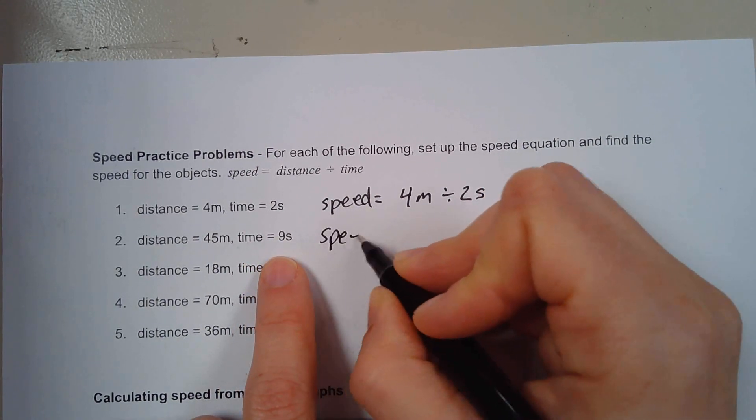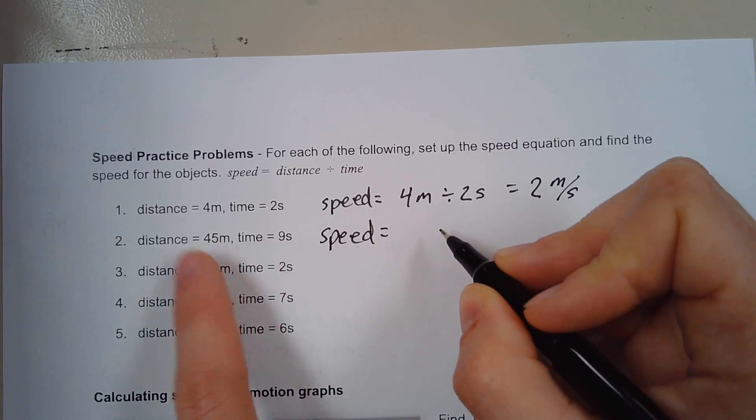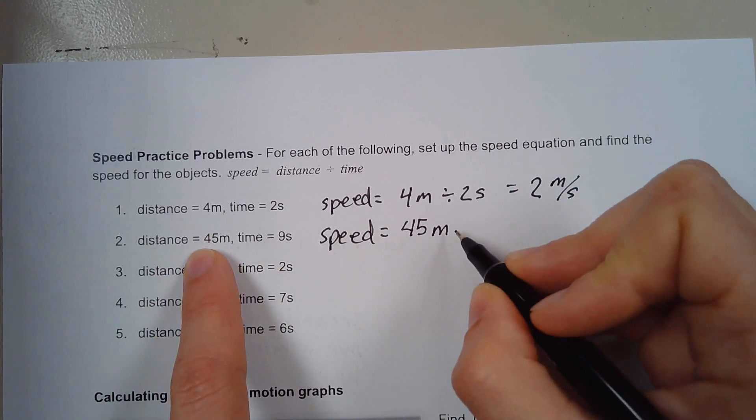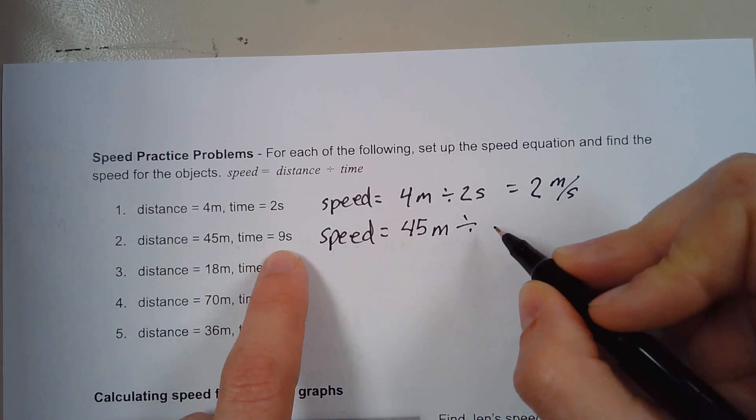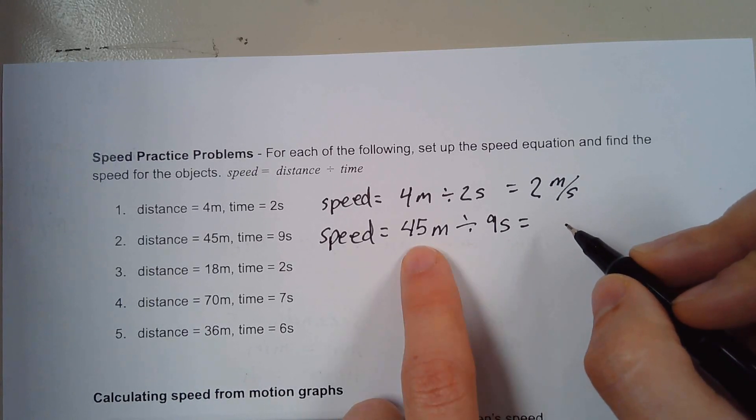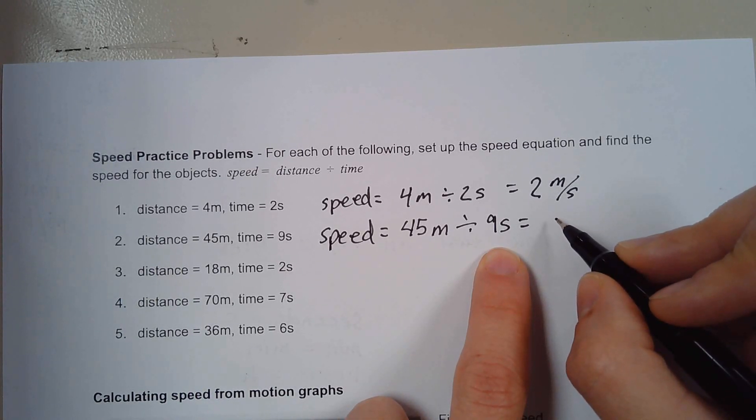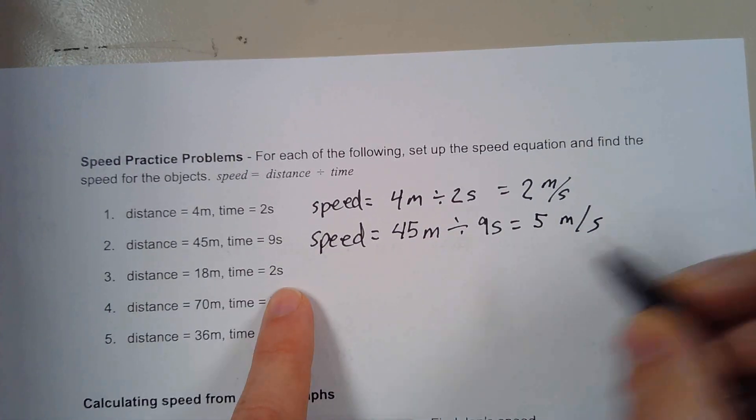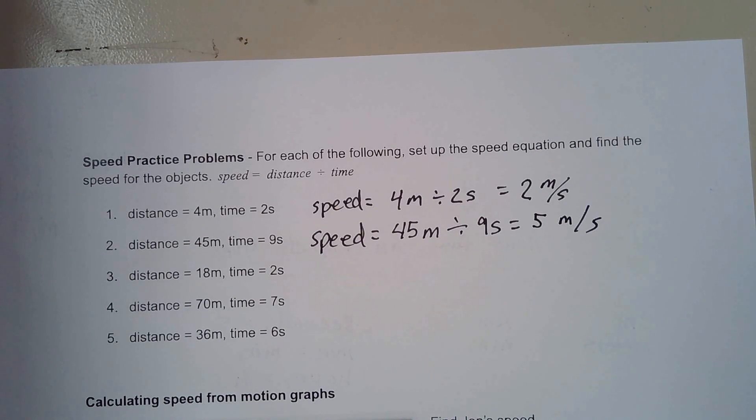This next one. The speed equals 45 meters. Sorry, its distance is 45 meters, and it takes nine seconds to do that. So it goes 45 meters in nine seconds, which if you divide 45 divided by nine, that is five, yes, five meters per second. So go ahead and try to do the rest of those. You can pause the video, try to do the rest of them, and then I'll go over the rest of them with you.